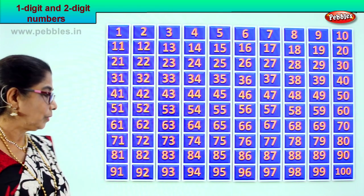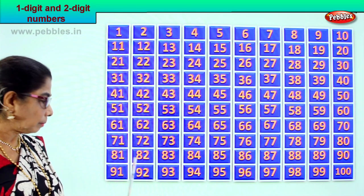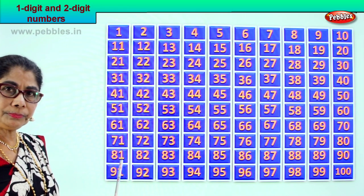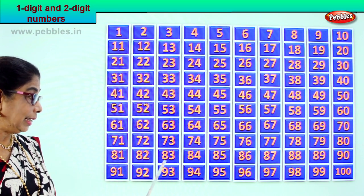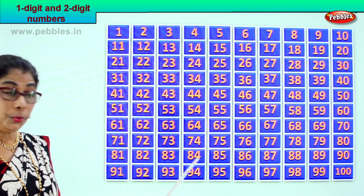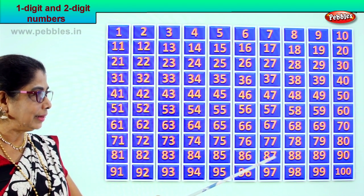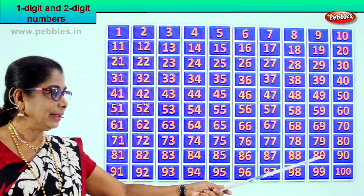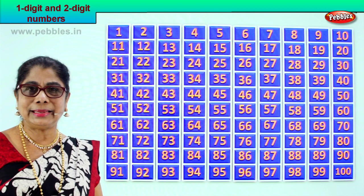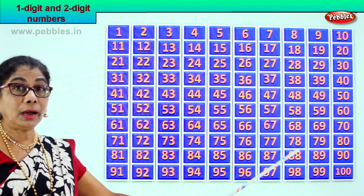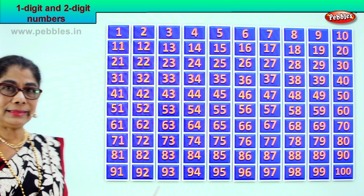Let's look at the next set of numbers — all are two-digit numbers. 81, 82, 83, 84, 85, 86, 87, 88, 89, and 90. 90 is 9 tens and 0 ones. All are two-digit numbers.